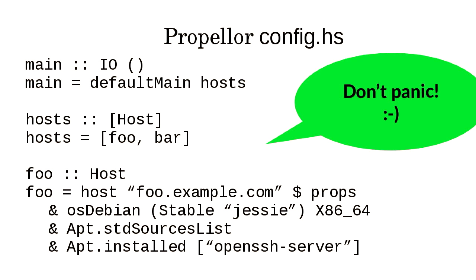This is a Haskell program. It starts with a main function, kind of like C does. In the second part we have a list of hosts: foo and bar. Down here we have foo, which is a host with a hostname. It has three properties: the Debian OS running Debian stable on AMD64, some kind of standard sources list file for that OS, and OpenSSH installed. So it's a very basic server. If you're getting confused, please let me know.